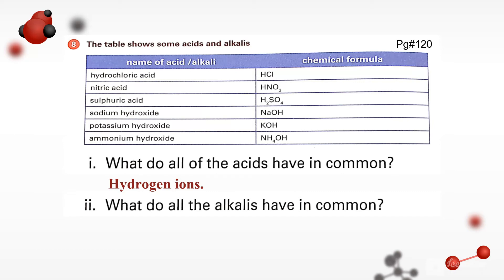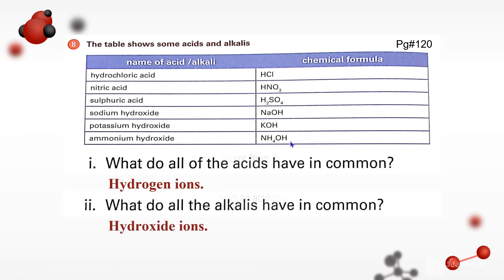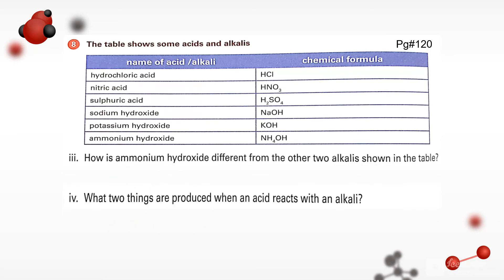What do all the alkali have in common? So we can see here that hydroxide ions are common in all the alkalies. The third part is how is ammonium hydroxide different from others? So ammonium hydroxide has hydrogen ions as well as hydroxide ions, both of them. What two things are produced when an acid reacts with an alkali? So salt and water is produced.